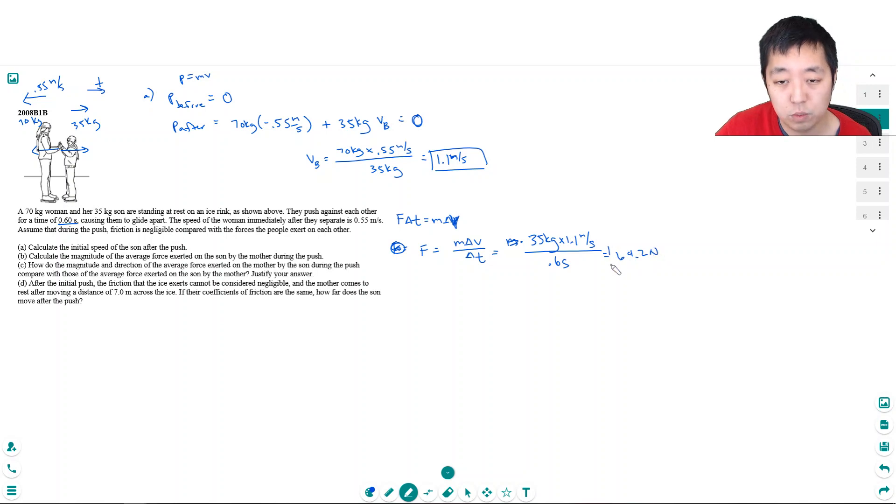This gives us 64.2 Newtons. How do the magnitude and direction of the average force exerted by the mother on the son during the push compare with the average force exerted by the son on the mother? Basically, they're equal and opposite by Newton's laws. Whatever force the boy exerts on the mom, the mom exerts on the boy.